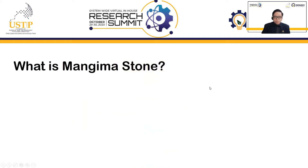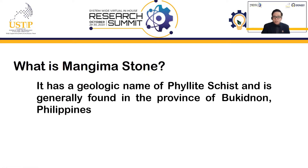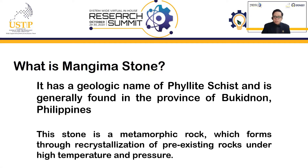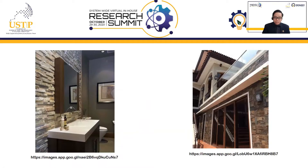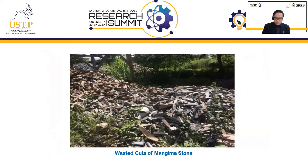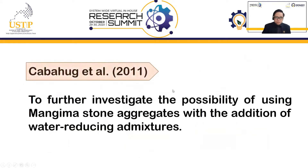In my study, I am going to use Mangima Stone. Mangima Stone has a geologic name of phyllite schists and is generally found in the province of Bukidnon, along the National Highway of Mangima, Bukidnon. This stone is extracted and used as decorative tile for houses, buildings, and resorts. In my study, these waste cuts will be crushed into fine material and used as fine aggregate in a concrete mixture. From the study of Kabahag et al., it is recommended to further investigate the possibility of using Mangima Stone aggregate with the additive of water-reducing admixtures.